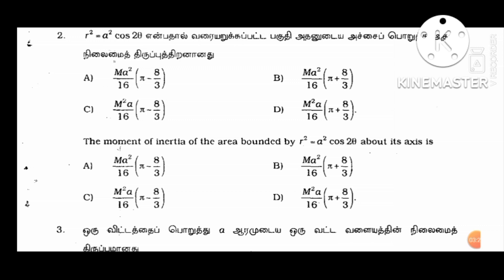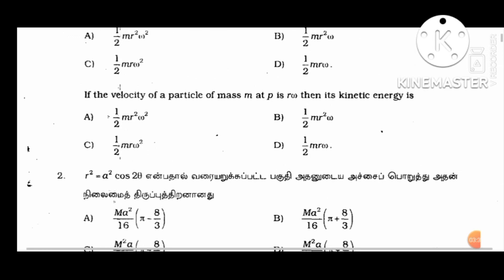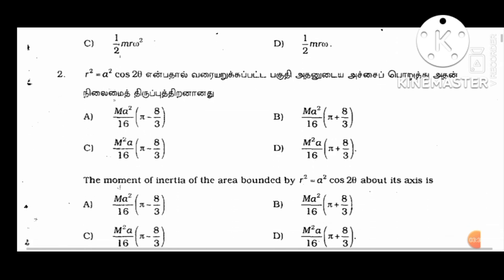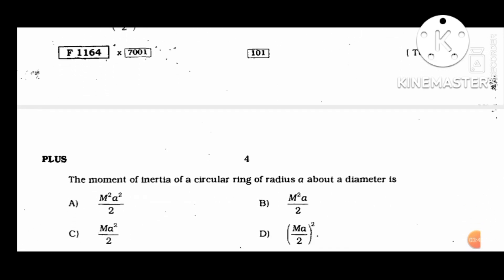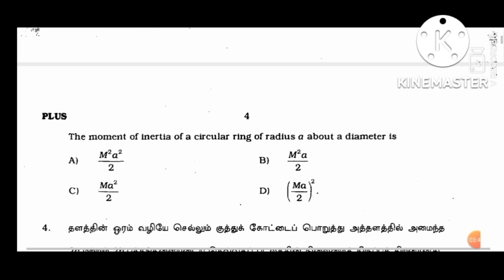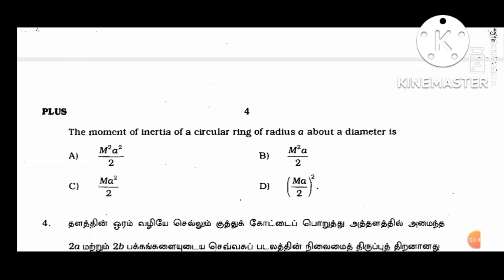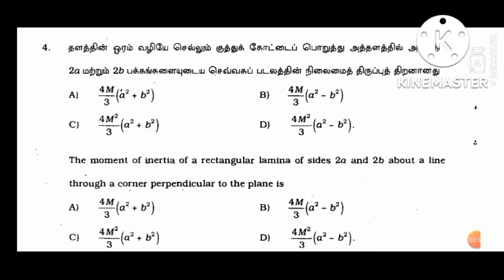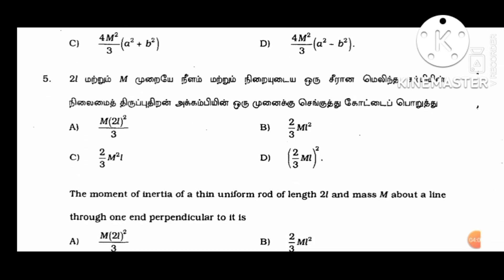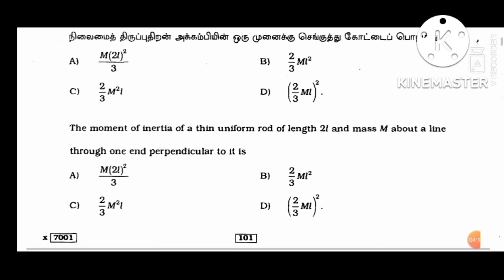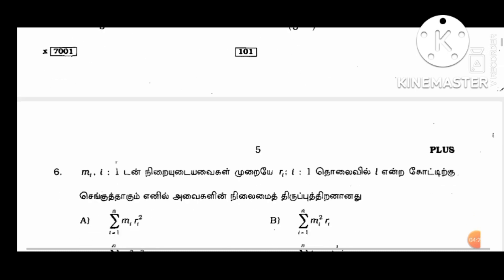The next questions are from mechanics and dynamics. The moment of inertia of a circular ring of radius A about the diameter. Also, the thin uniform rod of length 2L and mass m about the line through one end. These are based on mechanics and dynamics questions.